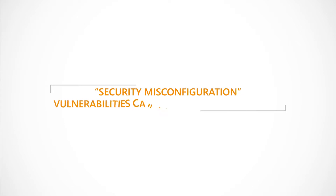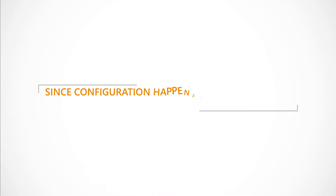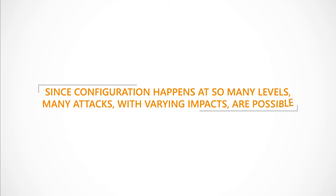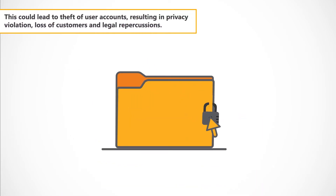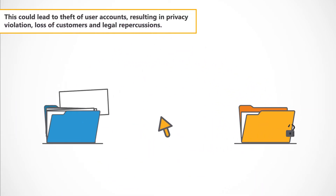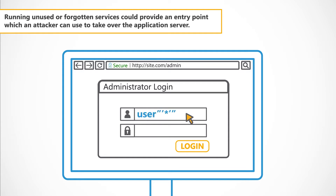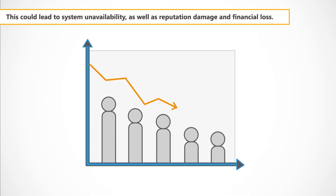Security misconfiguration vulnerabilities can have significant impacts. Since configuration happens at so many levels, many attacks with varying impacts are possible. Default admin passwords could be abused to expose the application and database. This could lead to theft of user accounts resulting in privacy violation, loss of customers, and legal repercussions. Running unused or forgotten services could provide an entry point which an attacker can use to take over the application server. This could lead to system unavailability as well as reputation damage and financial loss.